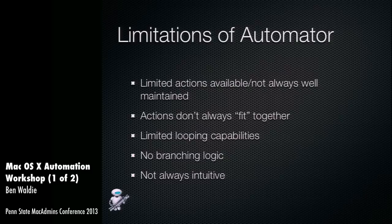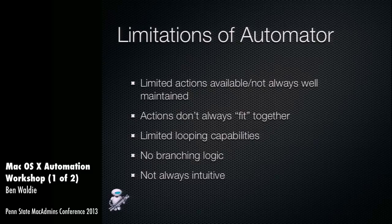Automator is not good at looping. It has a loop action so you can loop a workflow over and over again, but most people want to loop through a bunch of files and process them — and it doesn't do that well, though there are some workarounds. It doesn't have any kind of branching logic, so you can't build a workflow that looks at a situation and takes different courses of action. And it's not always intuitive, despite being designed as a tool that anybody can use.